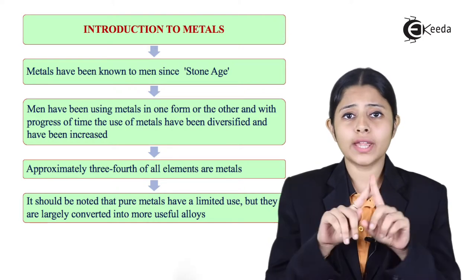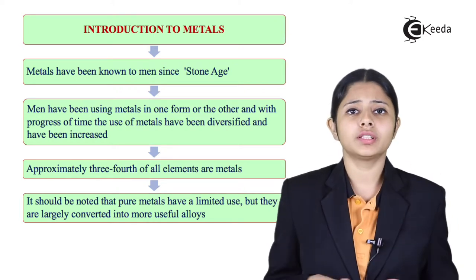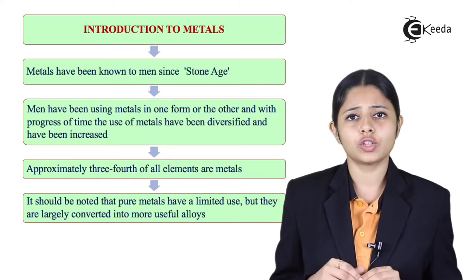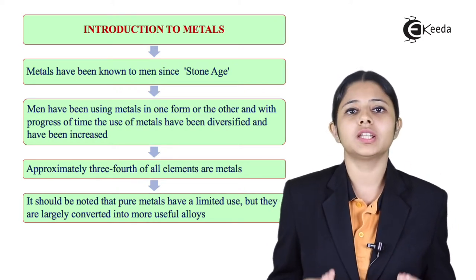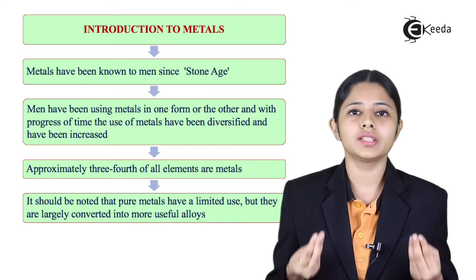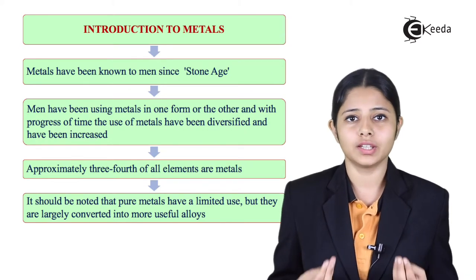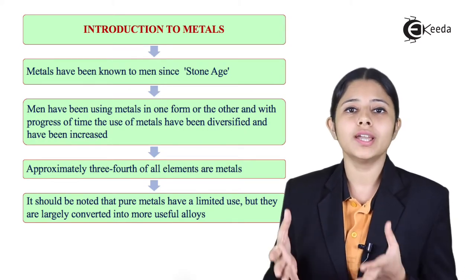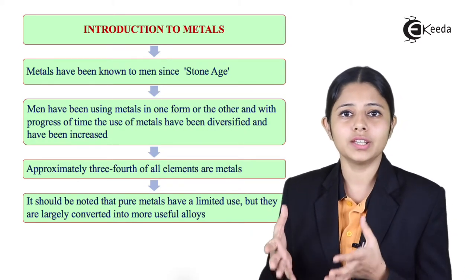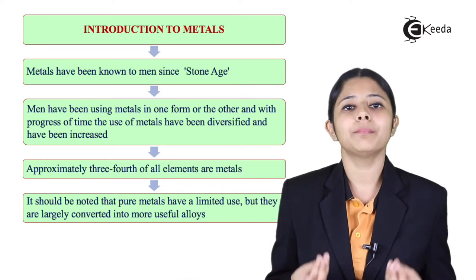Almost three-fourths of the entire periodic table consists of metals. The periodic table contains all the elements available in nature, and three-fourths of all those elements are metals.